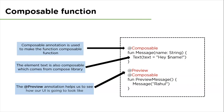The Composable function doesn't return any values like a regular Kotlin function, but instead emits user interface elements to the Compose runtime system for rendering. As we can see in this example, the Composable annotation is used to make the function 'message' a Composable function. The element 'text' is also a Composable function which comes from the Compose library. With the preview annotation, we are able to see how our UI is going to look like. The output of this example would be 'Hello Rahul'.